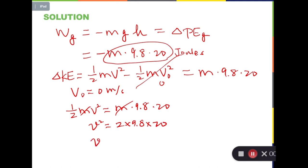And that's why v squared is equal to 2 times 9.8 times 20. And v is equal to square root of 40 times 9.8, which is square root of 392. And square root of 392 is equal to 19.8 meters per second. So this is the answer to part A.